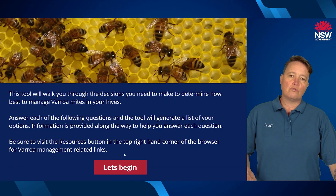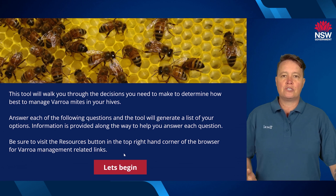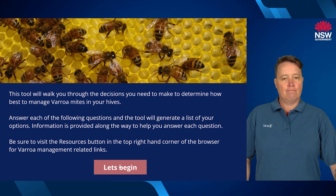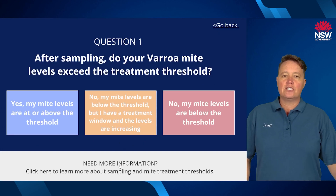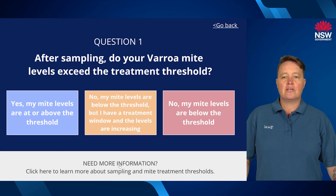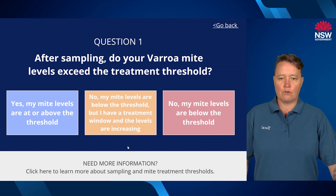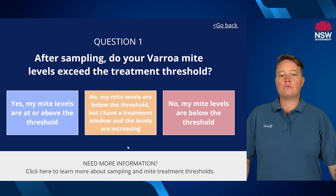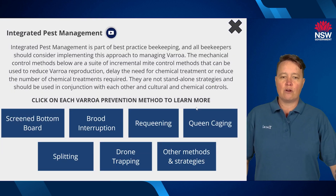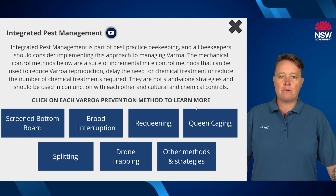The tool will walk you through how to make a decision about what you want to do in terms of treating your hives. It takes you through a series of questions. The first question is about threshold — when you sample your hive, are you actually at threshold? We'll first say that our mite levels are below threshold. Selecting that option takes you to a page about integrated pest management.